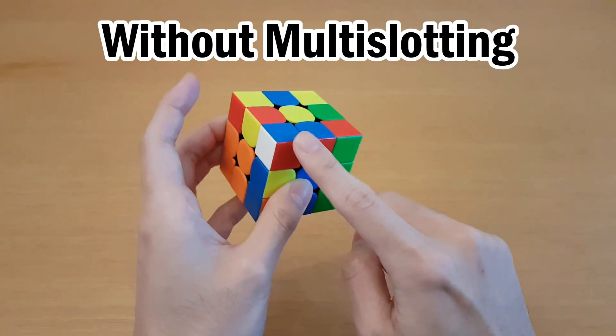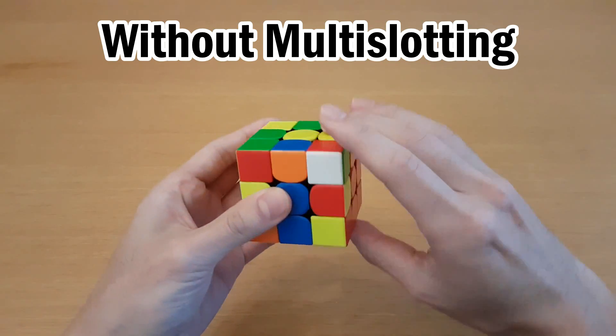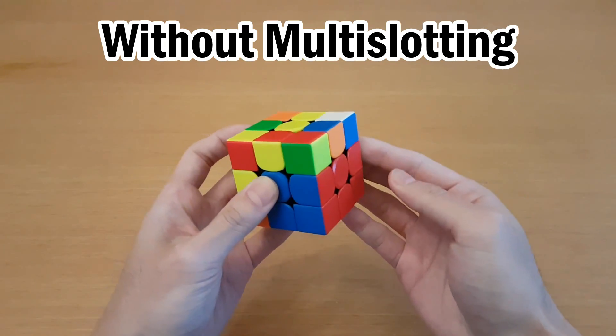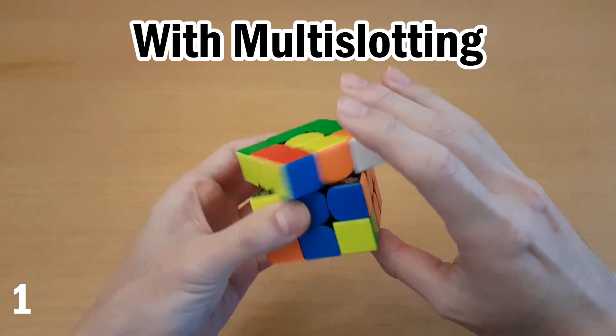For example, in this case, if I were to just insert this pair normally, then I end up with this very bad F2L pair, and I'd have to solve it like this. But if I change the way I solve this pair, I can solve all of these together like this.